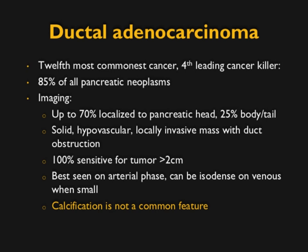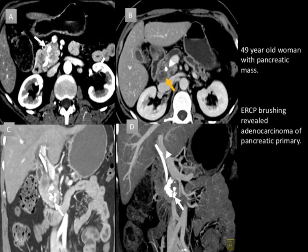When we think about pancreatic cancer, we always think about adenocarcinoma — the fourth leading cause of cancer deaths, comprising 85% of all pancreatic neoplasms, majority in the pancreatic head. These lesions are typically hypovascular, obstruct the common and pancreatic duct, and CT is very sensitive. Calcification is not something we typically associate with adenocarcinoma; most times calcification is seen in patients who had chronic pancreatitis and then developed cancer — that 3 to 5% overlap. The calcifications are not really the tumor; they reflect the underlying chronic pancreatitis.